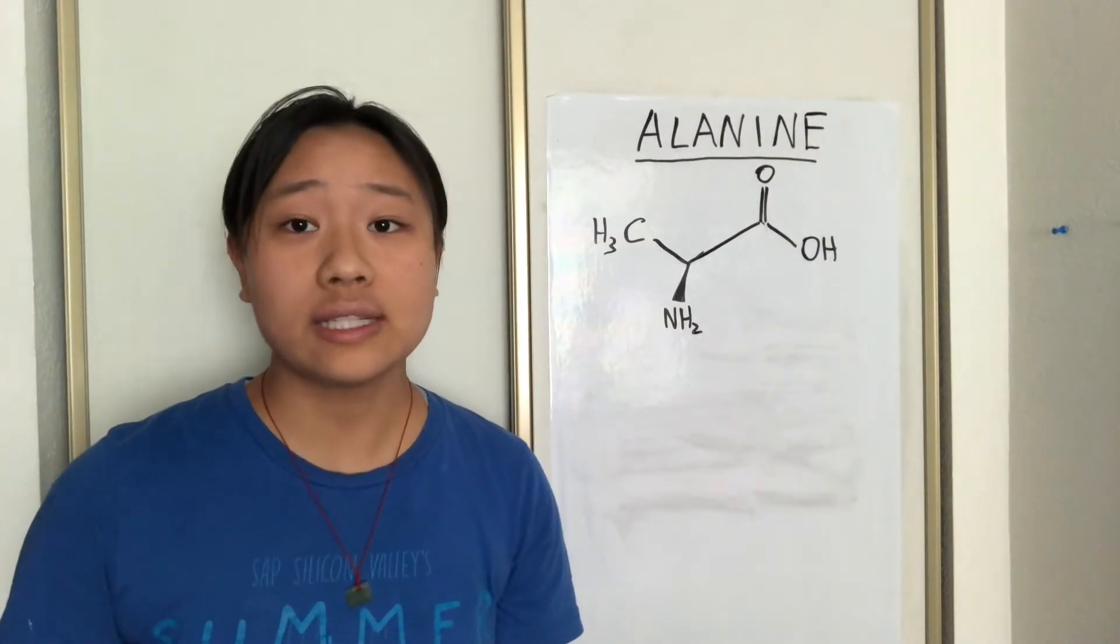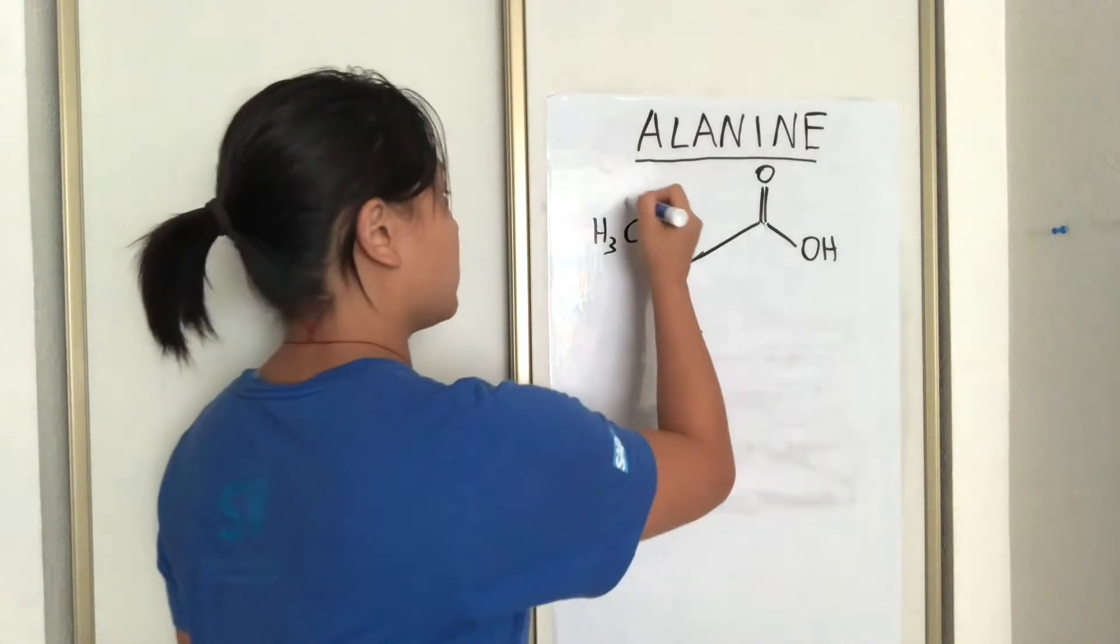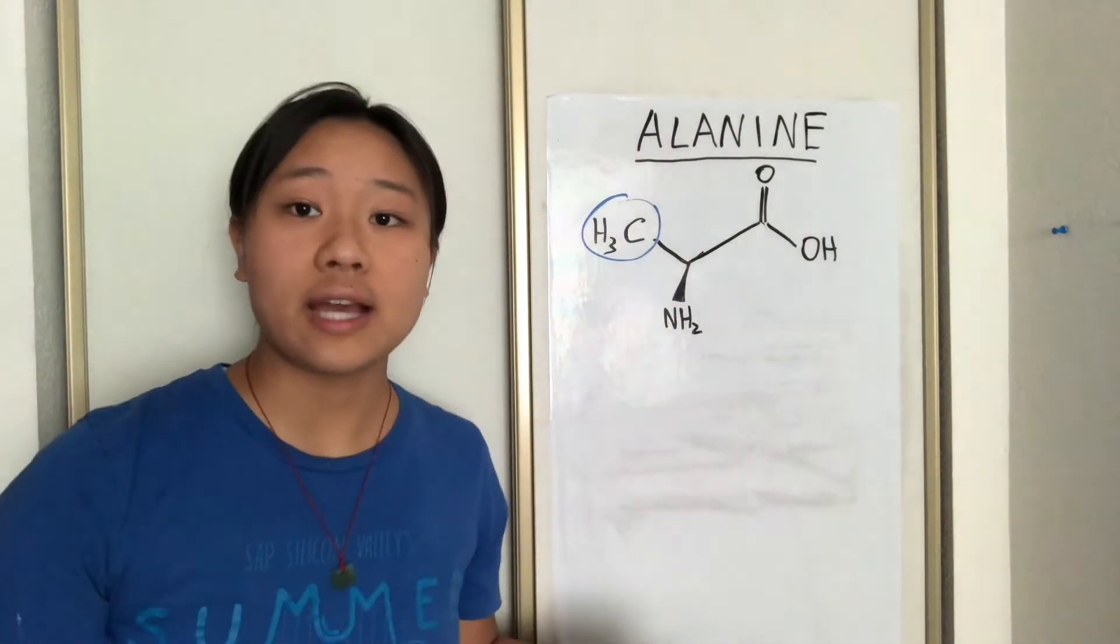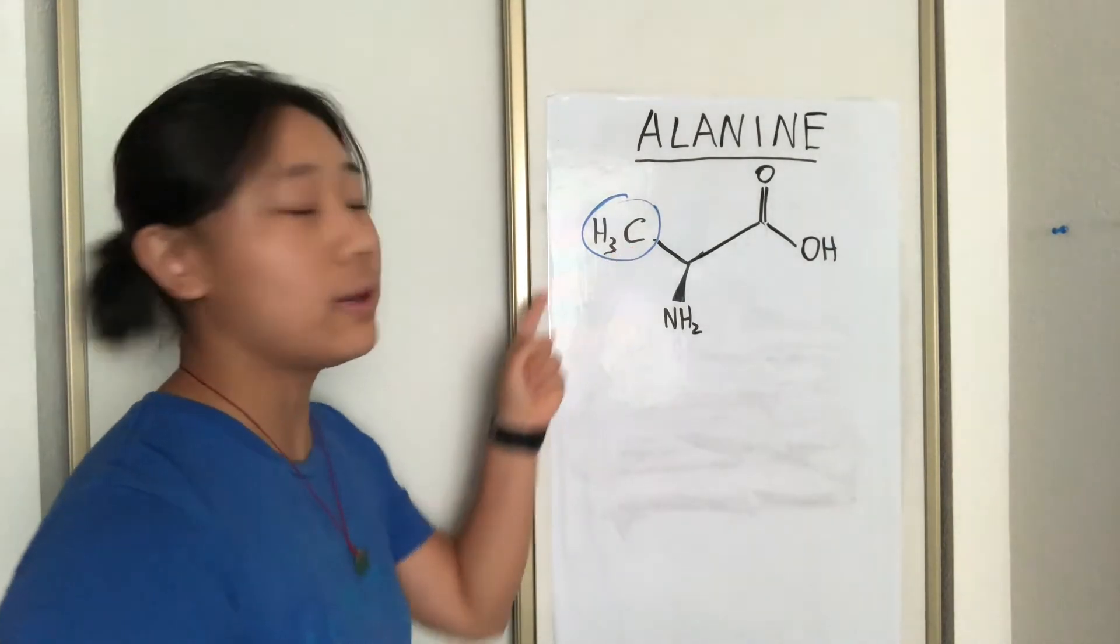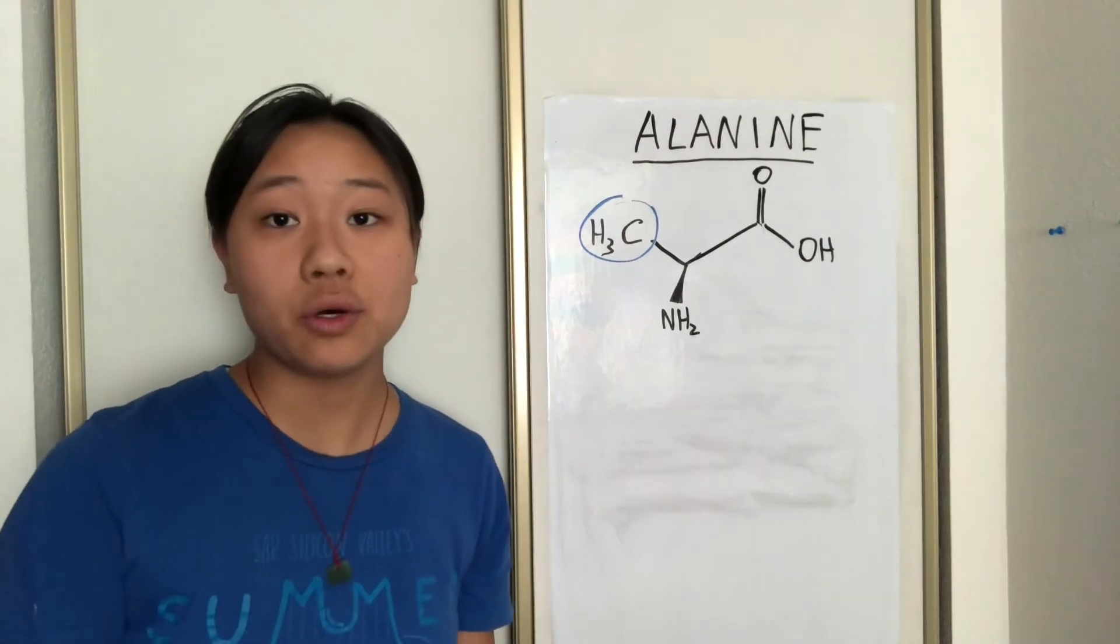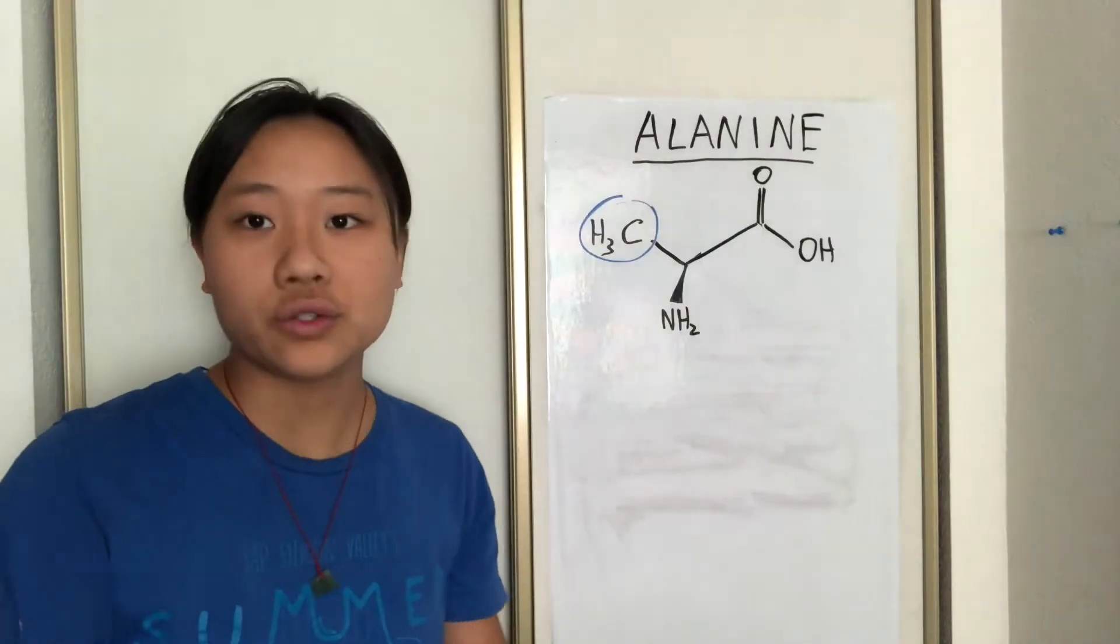Now our boy alanine is only slightly more complex than glycine. Here's its side chain, which instead of being a hydrogen like it is in glycine, is a methyl group, which contains one carbon and three hydrogens. This means it's non-polar, since a methyl group isn't gonna be either positive or negative, it's pretty neutral.